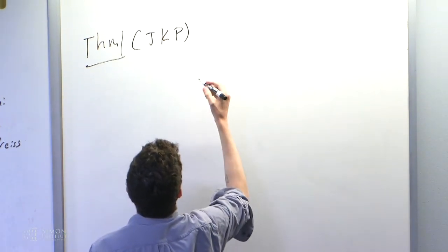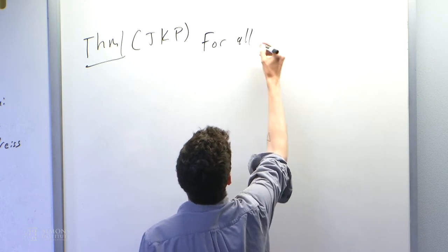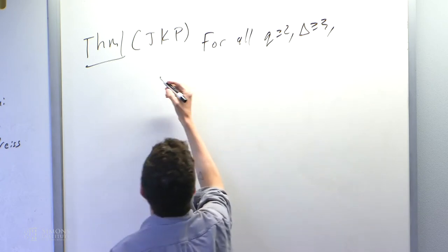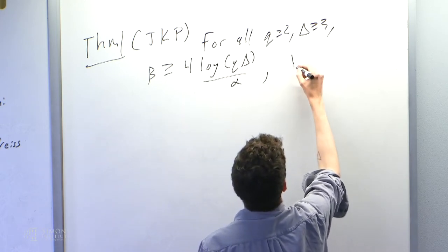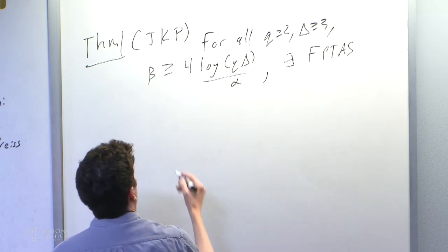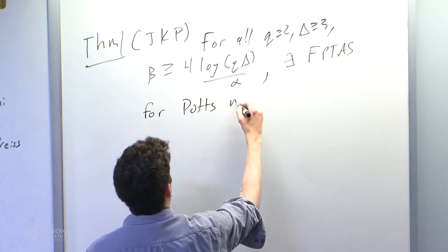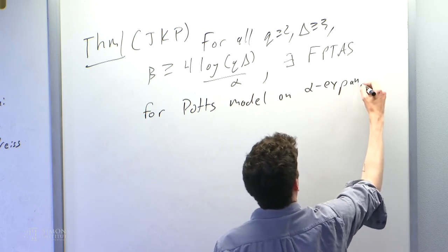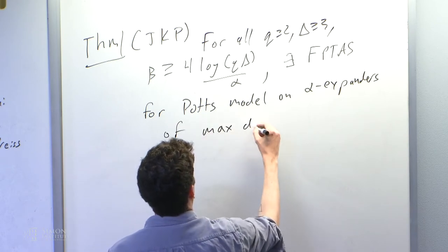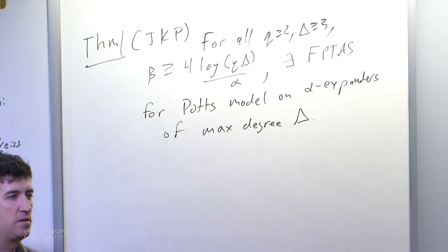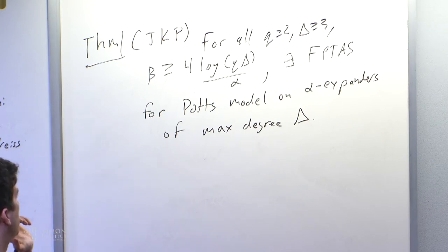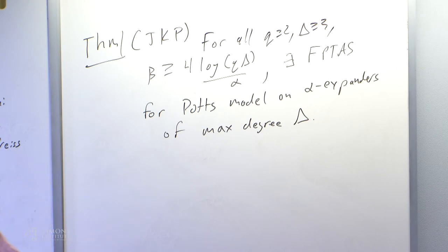The theorem — from the paper with Matthew Jensen and Peter Kibosh — states: for all q ≥ 2, delta ≥ 3, and beta ≥ 4 log(q·delta)/alpha, there is an FPTAS and an efficient sampling algorithm for the Potts model on alpha-expanders of max degree delta. Notice that this is a low temperature result. Usually the algorithms we hear are high temperature — if beta is small enough. Here it's the other extreme: if beta is large enough, if we're far enough into this phase coexistence regime, then there's an efficient algorithm.